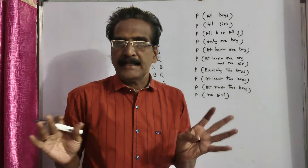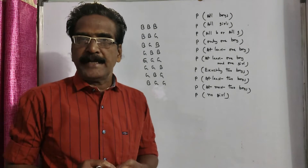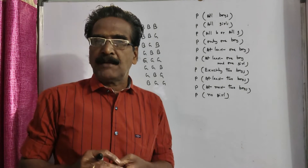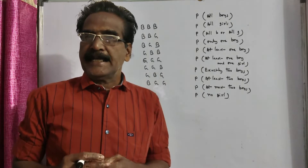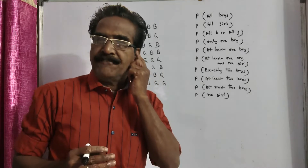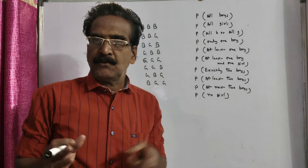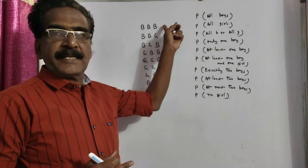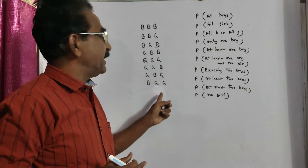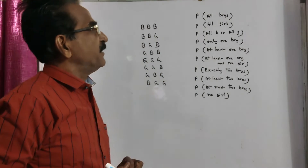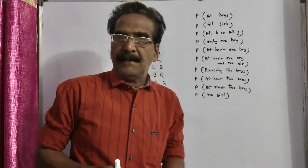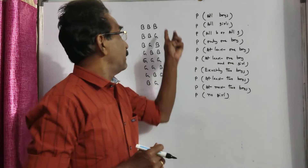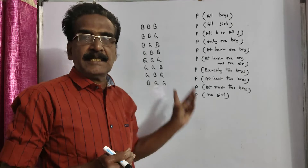We can have eight total outcomes in case of a family of three children. Those three children can be any of these eight outcomes. Now let us calculate the probabilities of different events based on these outcomes.